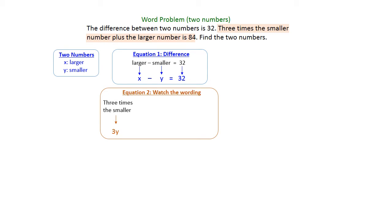Three times the smaller is going to be 3y, because y is our smaller number. Then we're going to add the x, x is our larger number, and that sum is going to be equal to 84. So three times the smaller plus the larger is 84.